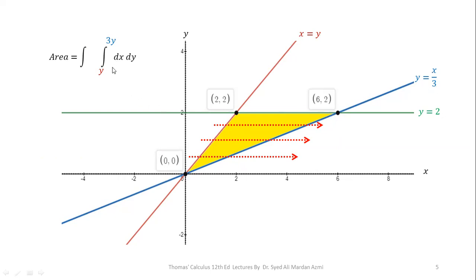After calculating the limits of the inner variable, we calculate the limits of the outer variable. To find the limits of the outer variable, we check the range of the region along that axis. Along the y-axis, the region starts at 0 (the origin) and ends at y = 2. So the limits of the outer variable y are 0 to 2.